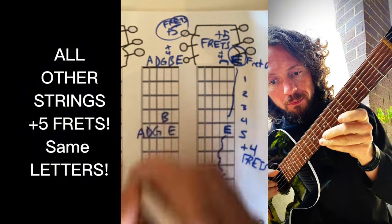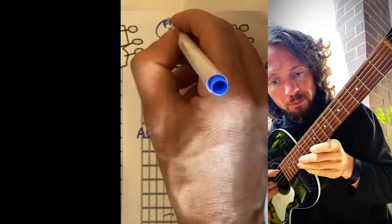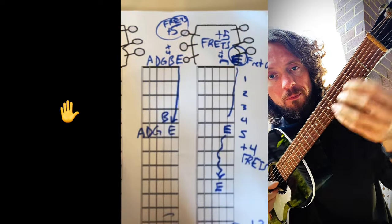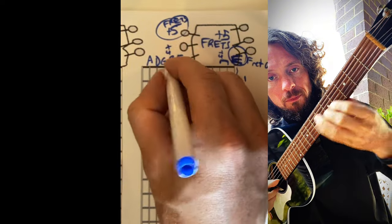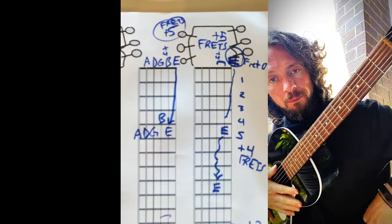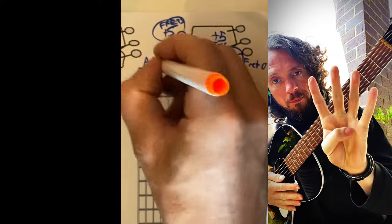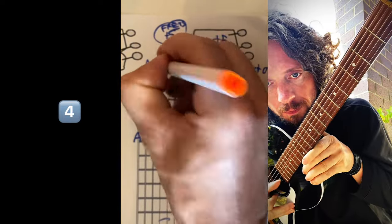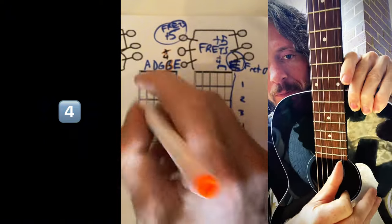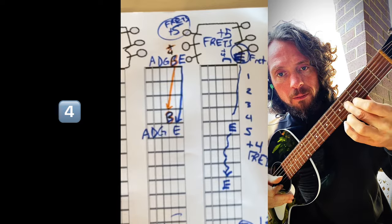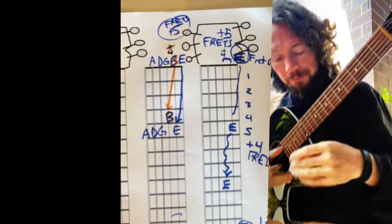So we have plus five from the distances of each string. First string to the second string, plus five frets. This is the only strange one. I'm going to use maybe a different color to indicate how it's different: plus four. That's when you're moving the B note to the string larger. So the open B string is plus four. Now all your other ones here are plus five.